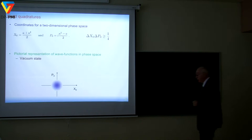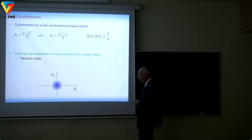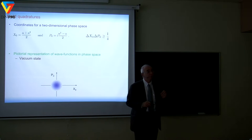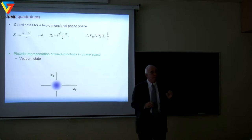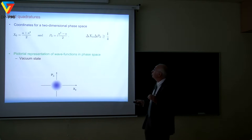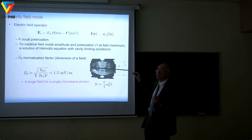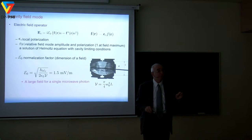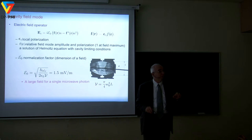The Fock states are definitely non-classical. They have finite energy, but it's easy to show that the average of the electric field in any Fock state is strictly zero — they have large energy but no phase. If you want something that looks more like a standard classical field, you need to go to coherent states. The vacuum state, pictured in phase space, is just some fluctuations around the origin. Fock states are non-classical states with negative Wigner function at certain points in phase space.